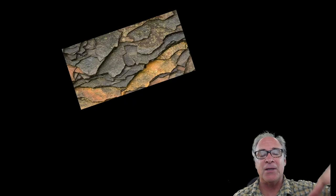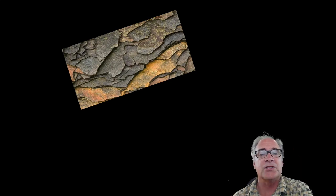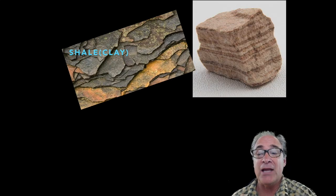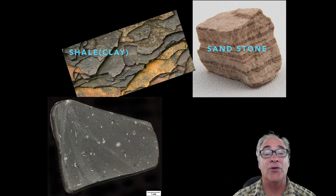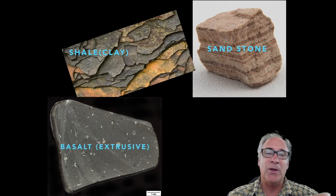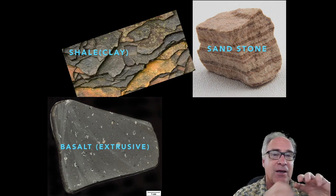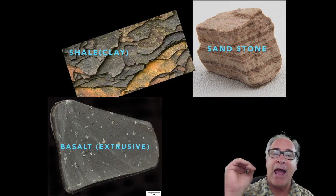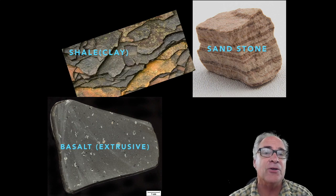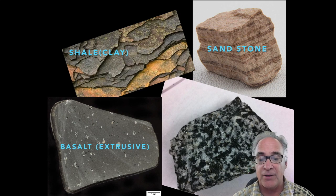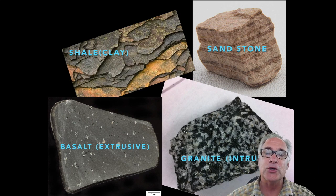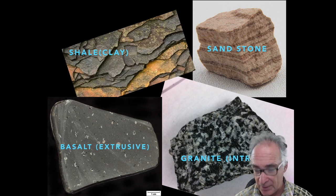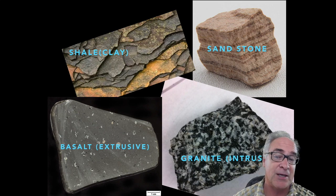Parent materials will dictate what kind of soil is going to be produced. Shale is basically the precursor to clay materials. Sandstone produces sand. Basalt, because it's extruded, gets air pockets added to it as it comes out of a volcano — those little holes create avenues for water to flow, so it's a little easier to weather. Granite, on the other hand, doesn't mix with air; it stays underground and solidifies and crystallizes, making it more dense and resistant to weathering. So granite produces a different type of soil than basalt or pumice.